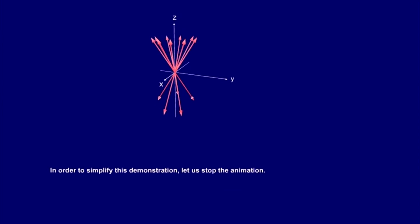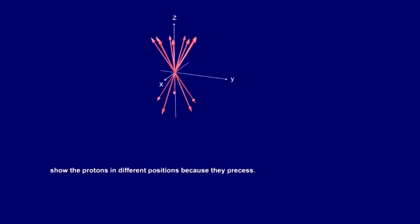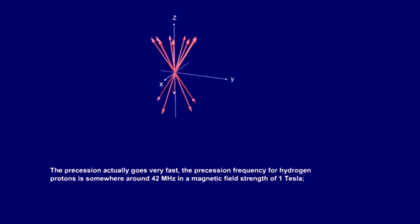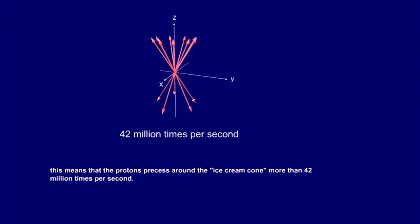In order to simplify this demonstration, let us stop the animation. What we see in the figure is just a picture taken at a specific point in time. The precession actually goes very fast — the precession frequency for hydrogen protons is somewhere around 42 megahertz in a magnetic field strength of one tesla, meaning the protons precess more than 42 million times per second.